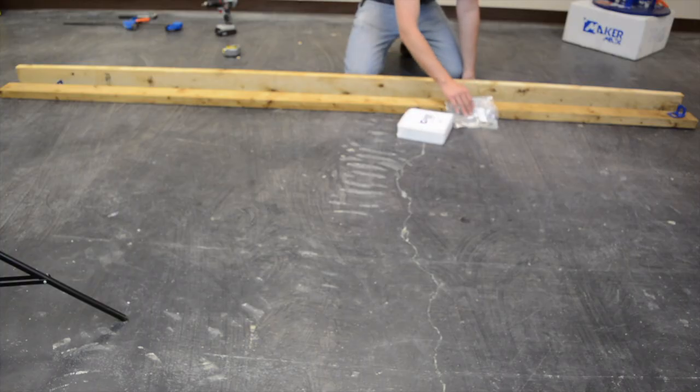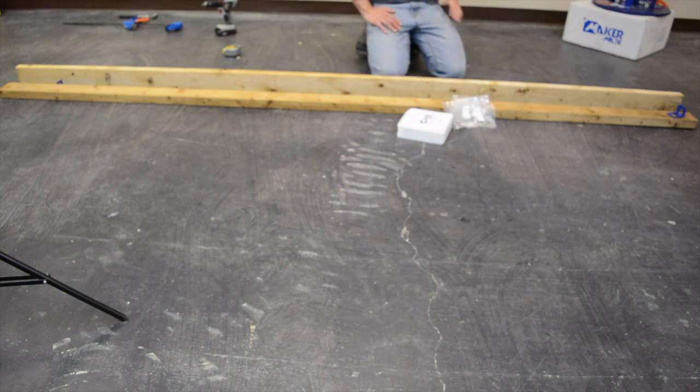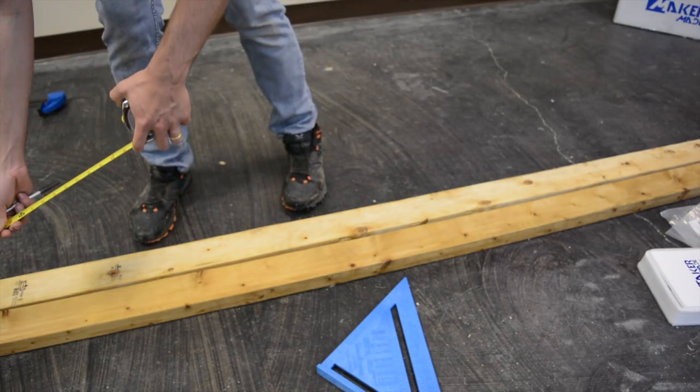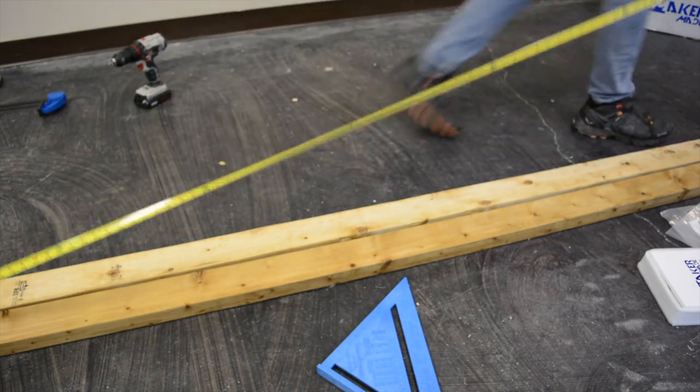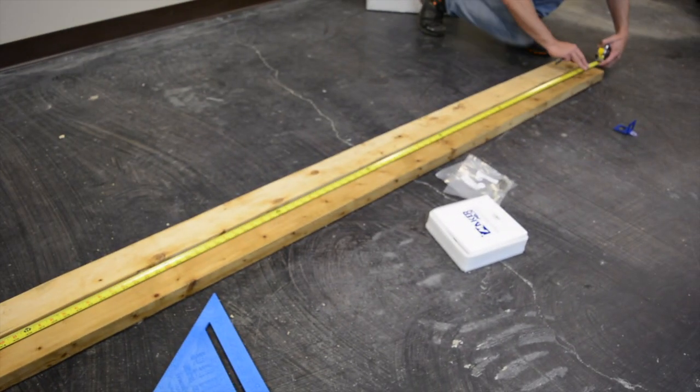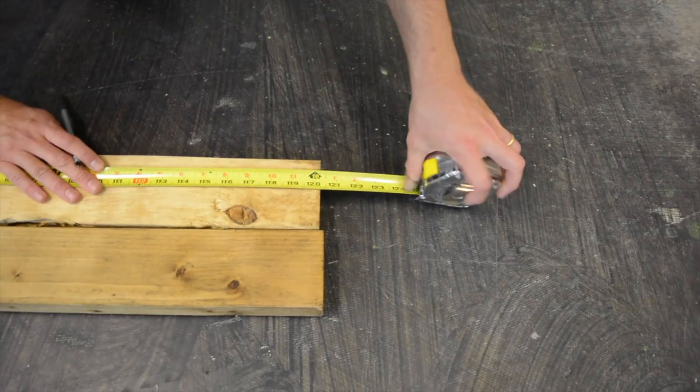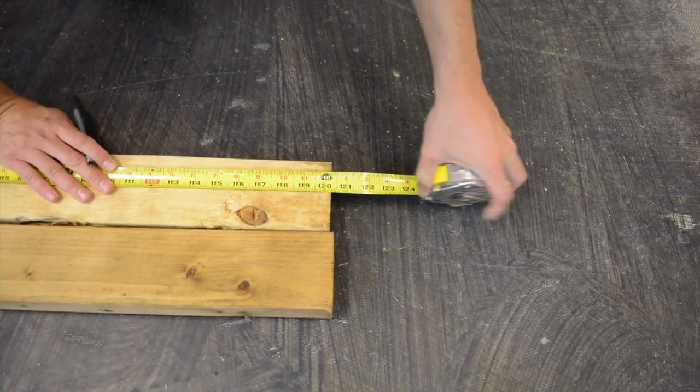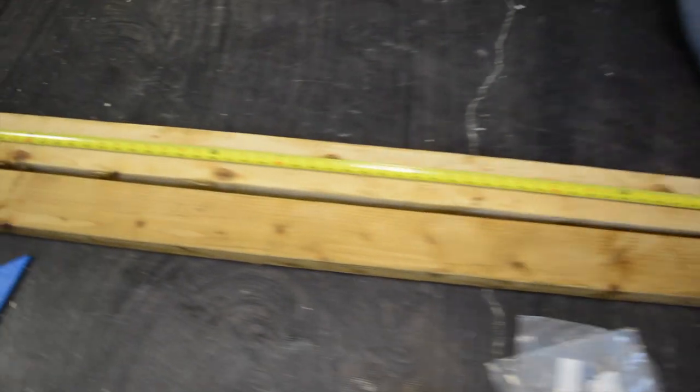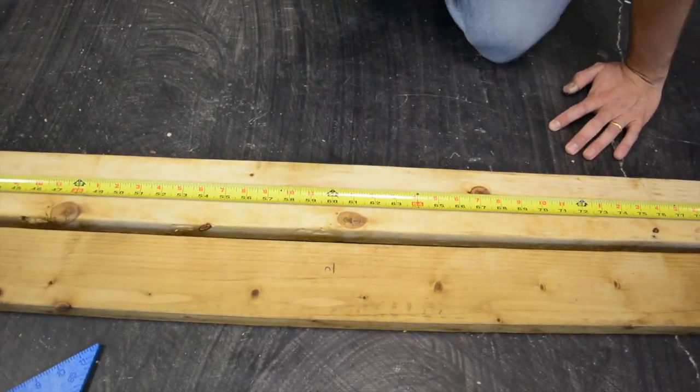Now the first thing we're going to do is measure the actual length of our 10-foot 2x4s. They're not ever going to be exactly 10 feet. The exact measurement is usually a little bit longer. So we're going to measure that distance, divide it in half, and then mark that exact center on each board. This is so we can always line both these boards up with their center lines.